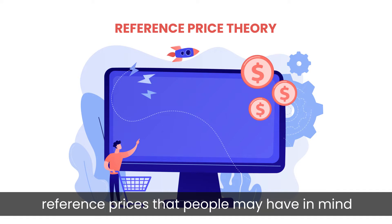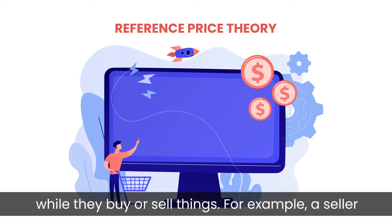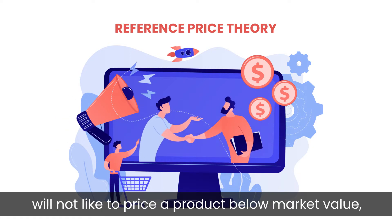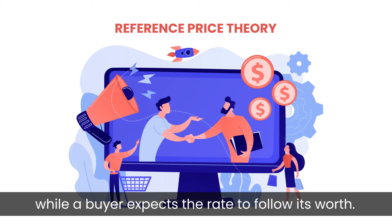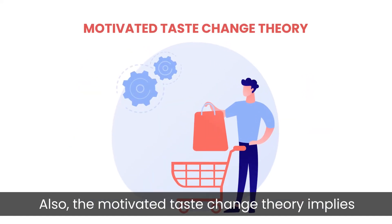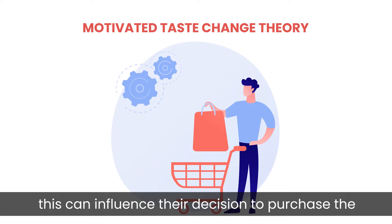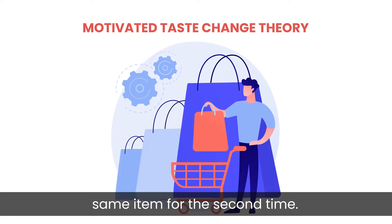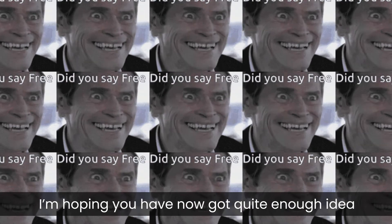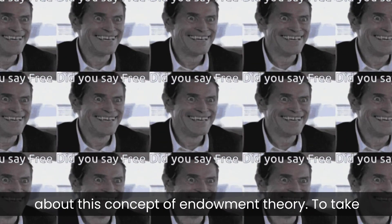The reference price theory talks about the different reference prices that people may have in mind while they buy or sell things. For example, a seller will not like to price a product below market value, while a buyer expects the rate to follow its worth. The motivated taste change theory implies that once a person has bought an item and used it, this can influence their decision to purchase the same item a second time.